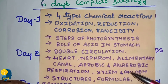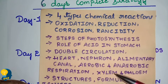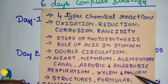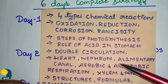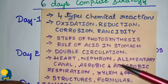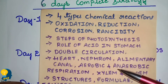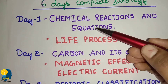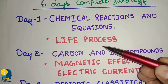In Life Process, also study xylem and phloem. Xylem is related to transpiration and phloem is related to translocation. These are two important concepts in Life Process. So day one strategy is: Chemical Reactions and Equations and Life Process. Complete your time dedicated to these two lessons on day one.